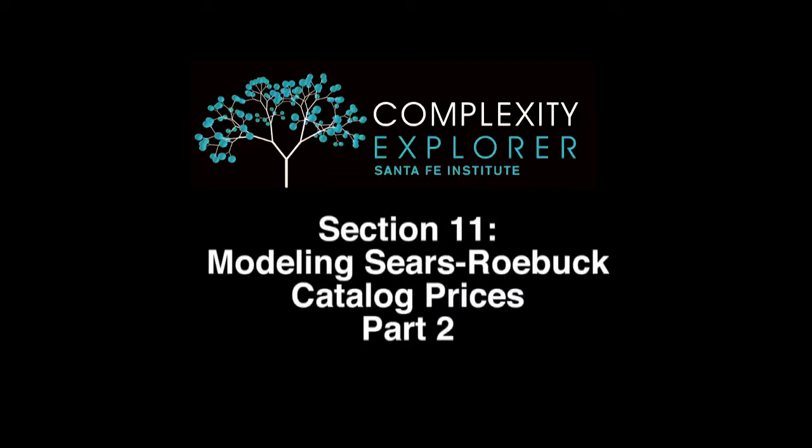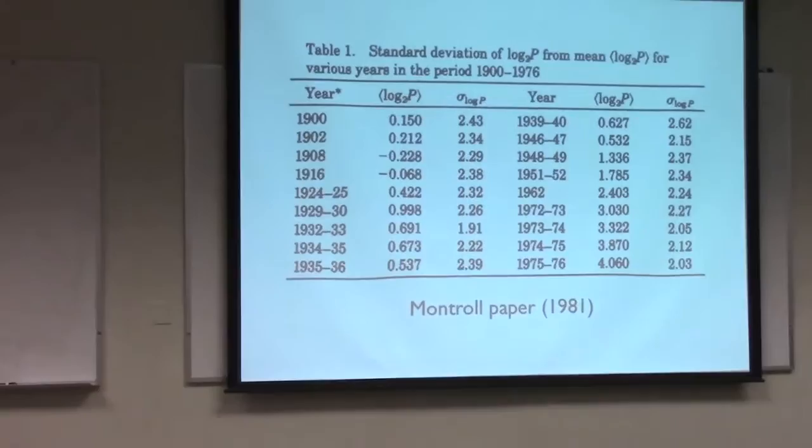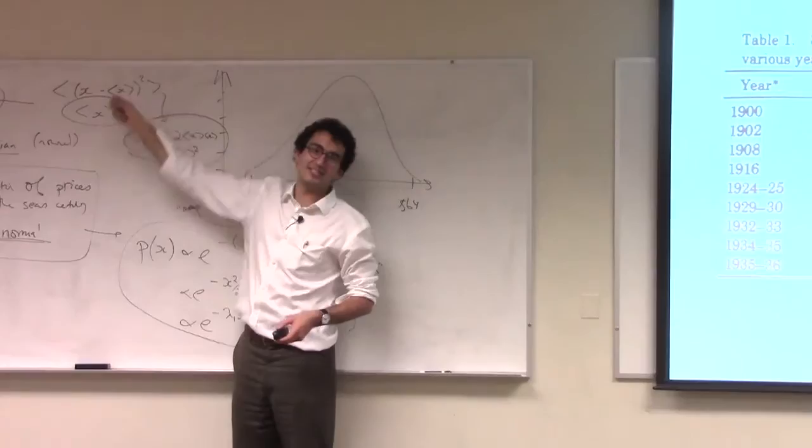So now what Montreux does is he goes through and looks at the value of these two expectation values. He looks at the value, in particular, of the average, this one here, one of the two maximum entropy constraints. And then he also looks at the value of this constraint here, how that changes over time.